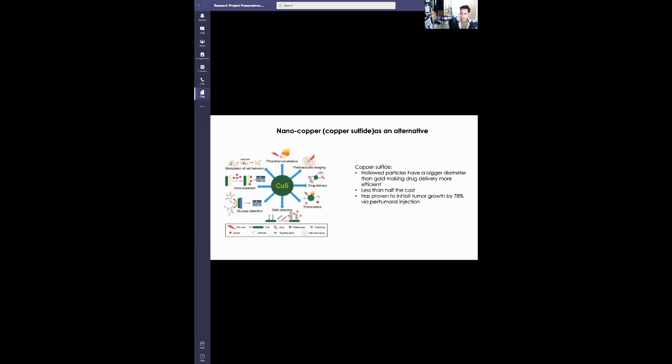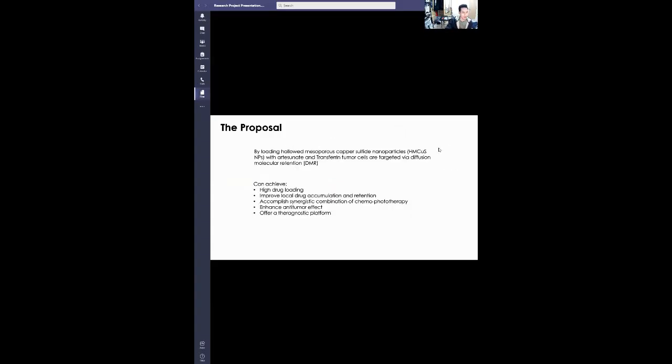A couple of points about nanogold is that it has been proven to inhibit tumor growth up to 78%. That is due to its hollow particles, the diameter is wider, it's bigger, so it can carry more drugs into the system. And also, they're half the cost. The way that we propose that this particle will be used is by loading hollow mesoporous copper sulfide nanoparticles with artesunate and transferrin. These particles will target tumor cells via diffusion molecular retention.